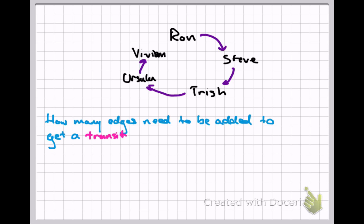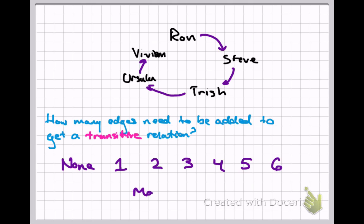I'm going to ask this in the form of a multiple choice question: how many edges would be needed to add into this existing relation to make the resulting enhanced relation transitive? Pause the video, look at the options, and then unpause when you've made your choice.